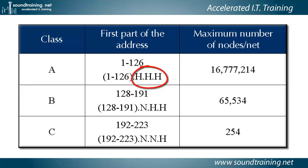If we take 2 to the power of 24, it gives us 16,777,216. We subtract 2, and that's where that number comes from. So anytime you want to know the total number of hosts on a network, take 2 to the power of the number of host bits, subtract 2, and that tells you how many hosts you can have per network.